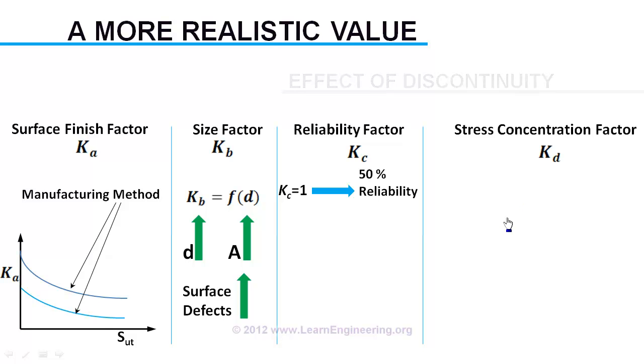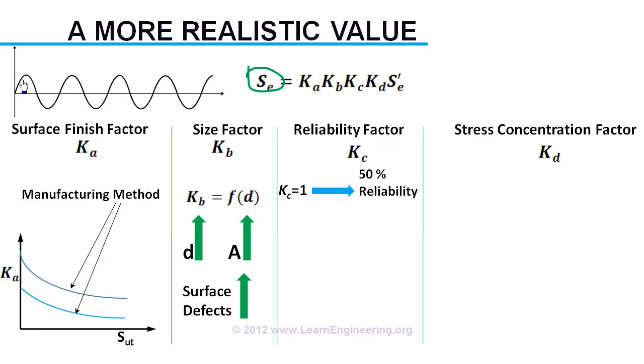Comprising all these effects together, a realistic endurance value will be as follows. This is a safe stress amplitude if stress is completely reversible, or when stress mean value is zero.